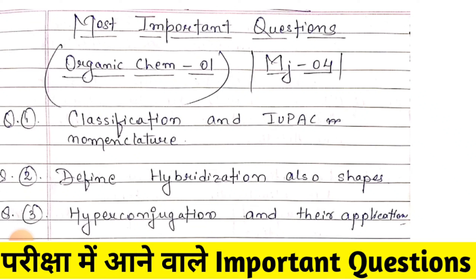If we look at our first question: Classification and IUPAC Nomenclature. You have to cover this topic very well so that 25 marks will be covered. If you do not complete IUPAC Nomenclature, you will have problems in hybridization, in other structures, and in electronic configuration. So you have to do these important questions in chemistry and understand classification and IUPAC nomenclature.